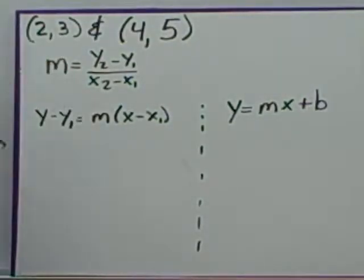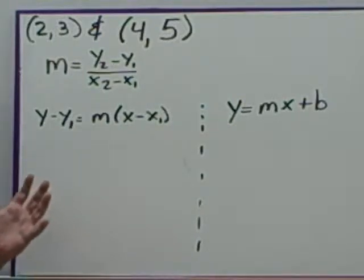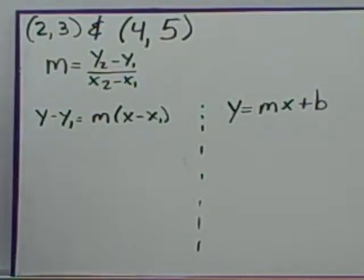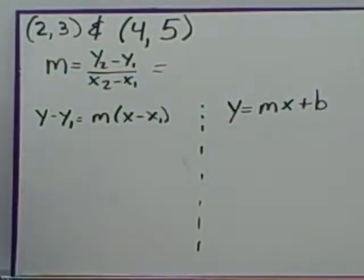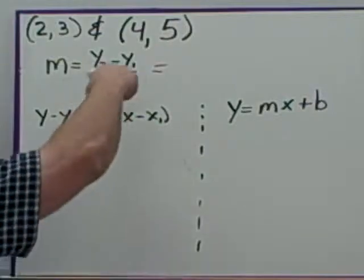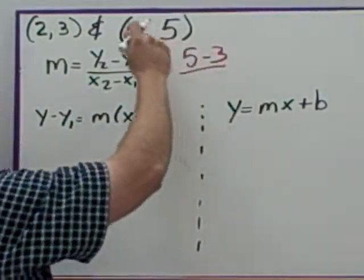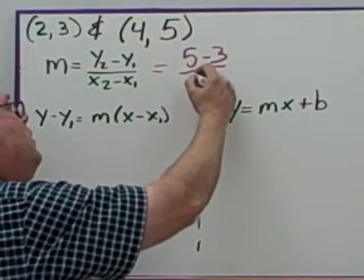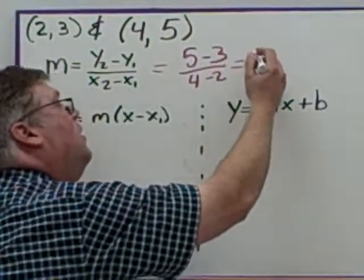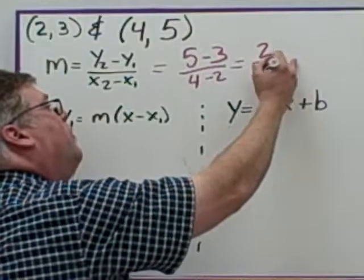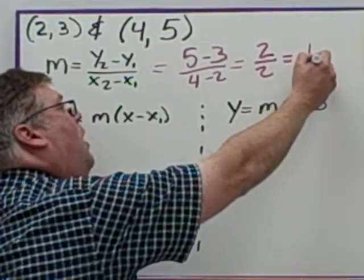You could also be given two points, just as with the point-slope form. Here we are looking for slope-intercept form but are only given two points, so you must start by finding the slope. To get the slope, do y2 minus y1 — that's 5 minus 3 — over x2 minus x1 — that's 4 minus 2 — which gives 2 over 2, equal to 1.